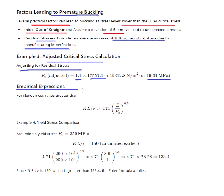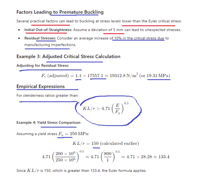Empirical expressions: if the slenderness ratio KL/R is greater than 4.71 times the square root of E/Fy, the Euler formula applies. For Fy = 250 MPa and KL/R = 150, the threshold 4.71√(E/Fy) calculates to approximately 133.4. Since KL/R = 150 is greater than 133.4, the Euler formula is applicable for this column.